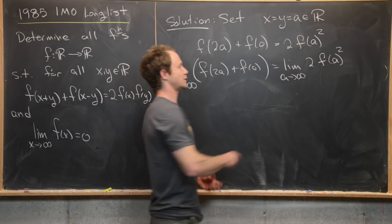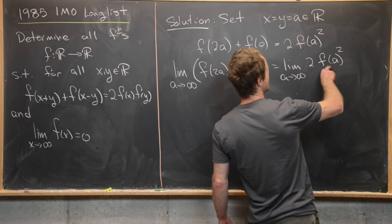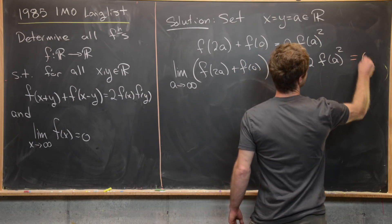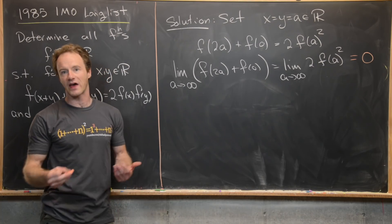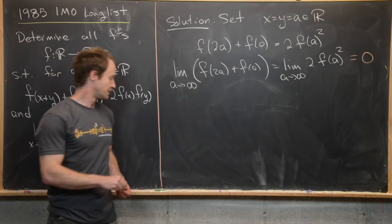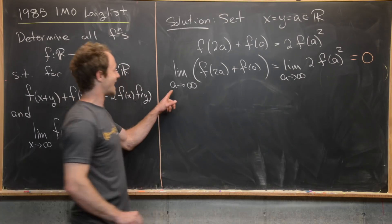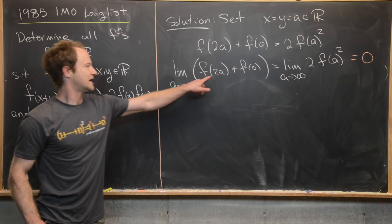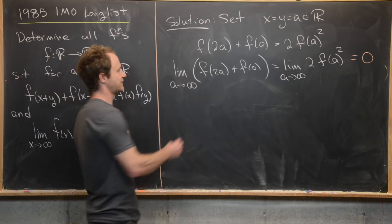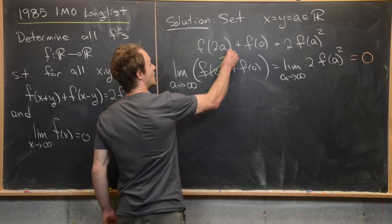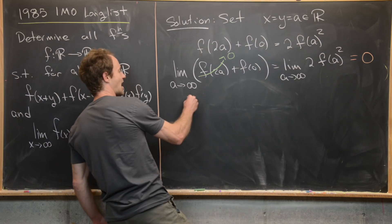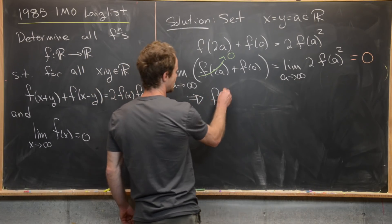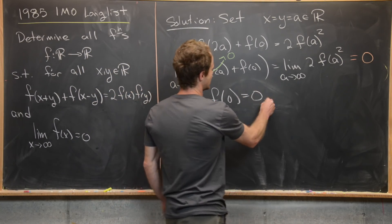Now by some limit rules, we know that the limit of 2f(a)² is going to be equal to zero given that the limit of f(a) itself is equal to zero. And furthermore, we know as a approaches infinity, 2a will also approach infinity, which makes this term also tend off towards zero. So immediately we have one value of our function, and that is f(0) = 0.